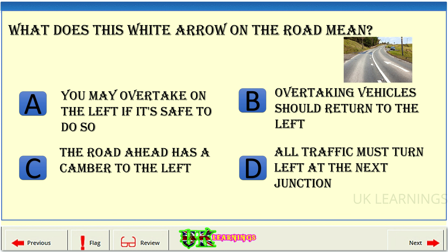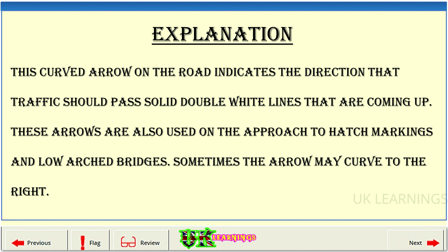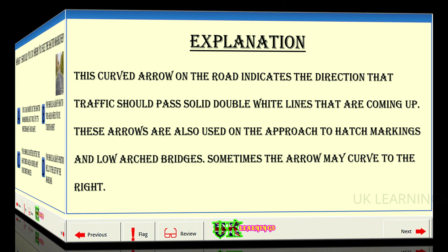What does this white arrow on the road mean? A: you may overtake on the left if it's safe to do so. B: overtaking vehicles should return to the left. C: the road ahead has a camber to the left. D: all traffic must turn left at the next junction. The correct answer is B: overtaking vehicles should return to the left. Explanation. This curved arrow on the road indicates the direction that traffic should pass solid double white lines that are coming up. These arrows are also used on the approach to hatch markings and low arched bridges. Sometimes the arrow may curve to the right.